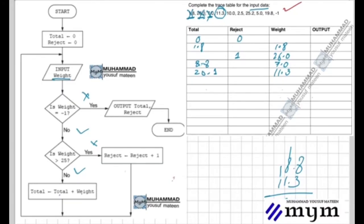The next value is 10.0. We input 10.0, check if it's minus one - no. Is it greater than 25? No. We add it to the total: 20.1 plus 10.0. Wait, there's a mistake - I wrote 10.3 but it should be 10.0. So 20.1 plus 10.0 equals 30.1. The answer is 30.1.